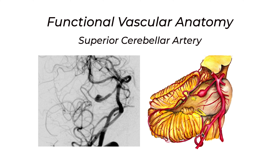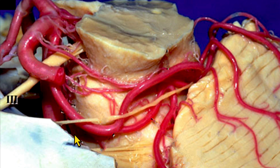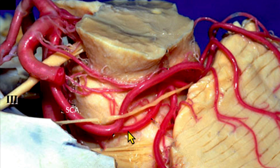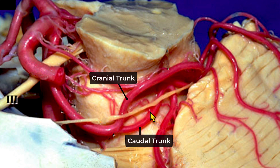We take this as an occasion to understand the functional vascular anatomy of the superior cerebellar artery. In this cadaveric specimen of the posterior cranial fossa, we can see the basilar trunk dividing into the posterior cerebral artery and the superior cerebellar artery, which traverses below the course of the oculomotor nerve. It encircles the brainstem at the pontomesencephalic junction and dips down close to the course of the trigeminal nerve, where it divides into two major trunks: the cranial and the caudal division.